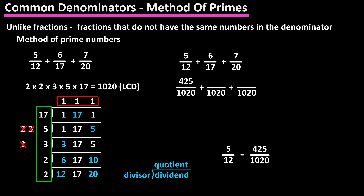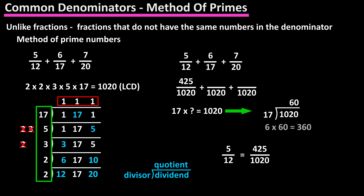For the second fraction, 6 over 17, in order to get 1,020 in the denominator, we divide 1,020 by 17 to find the multiplier, which is 60. Next we need to multiply the numerator of 6 by the same value of 60, which equals 360. So our new fraction is 360 over 1,020.